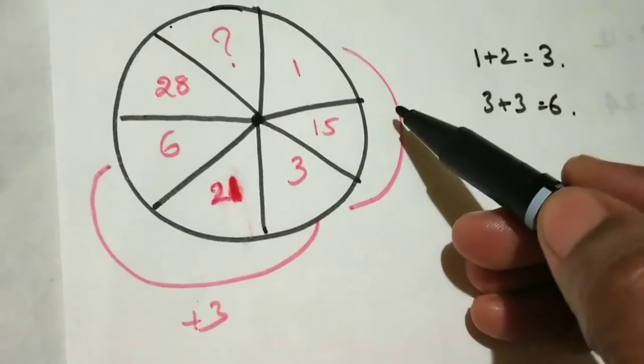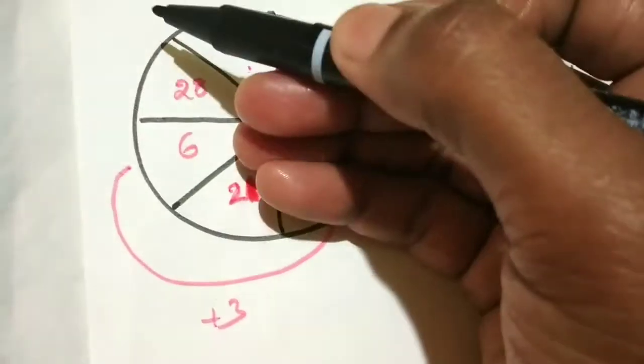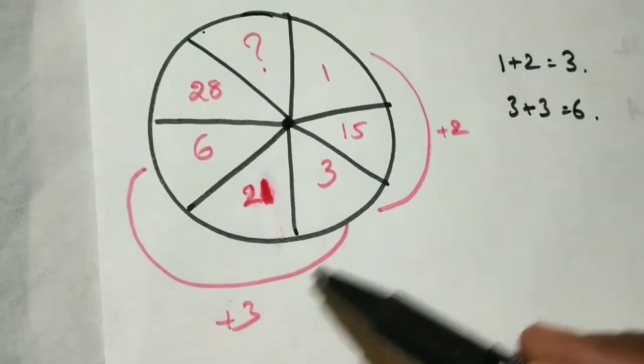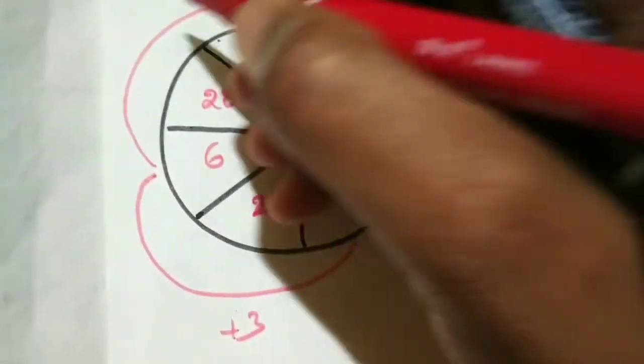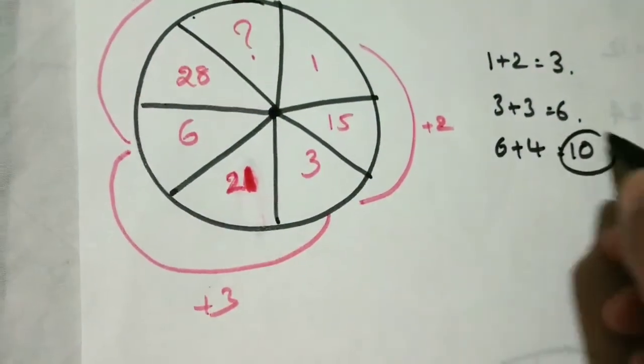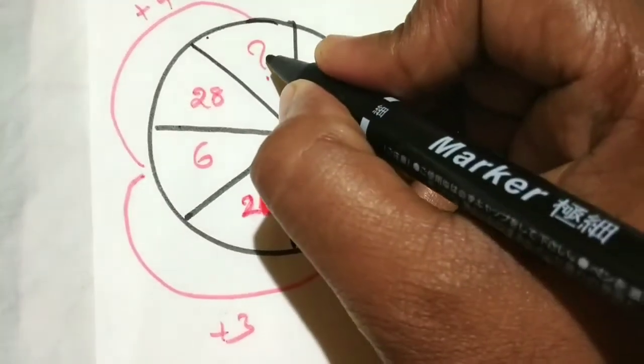Like that: 1 plus 2 equals 3, 3 plus 3 equals 6. Now the required thing is how much you have to add? Plus 4. That means 6 plus 4 equals 10. This is our answer. That means it is applied for all the remaining numbers or not? Also have to be checked.